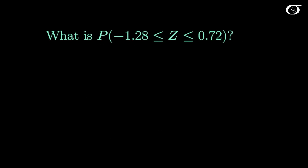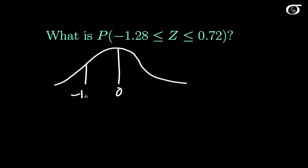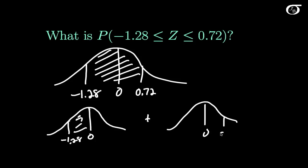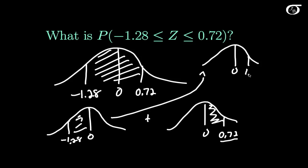What is the probability that z lies between minus 1.28 and 0.72? We draw our picture with 0 in the middle, minus 1.28 to the left, and 0.72 to the right. We split this into two parts: the area between 0 and minus 1.28, plus the area between 0 and 0.72. By symmetry, the area between 0 and minus 1.28 equals the area between 0 and 1.28, since our table has no negative z values.